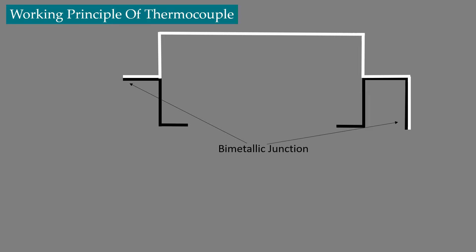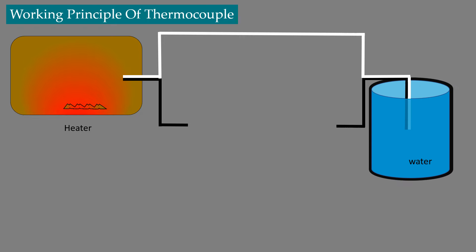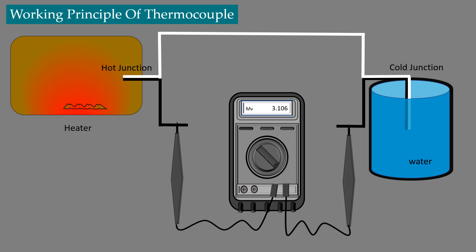One junction is heated using a heater and the other end is immersed in water. When a multimeter is connected in the circuit, we can see that the multimeter is giving some reading. This is the voltage between the hot and cold junctions.